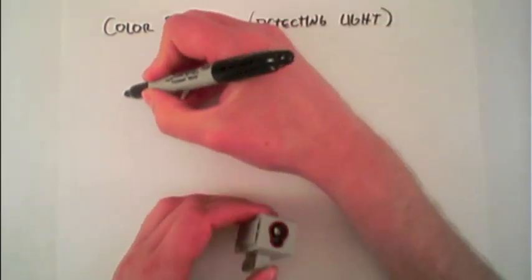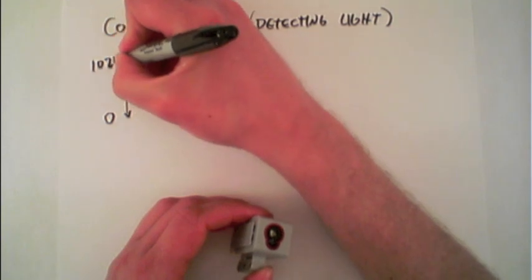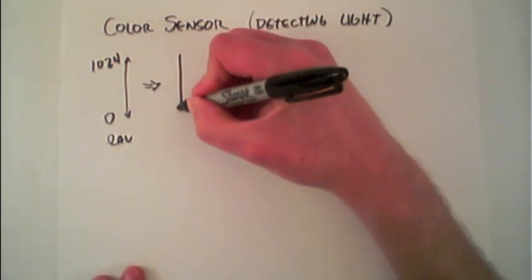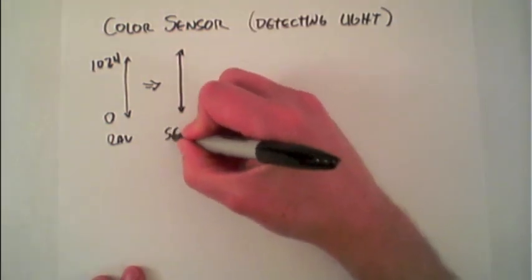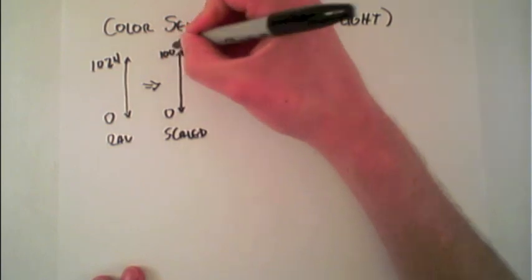The sensor itself actually reads values from 0 to 1024. These are the raw values that it reads. However, when programming, typically you read the scaled values, which will be in a 0 to 100 range.